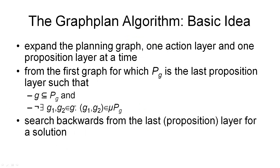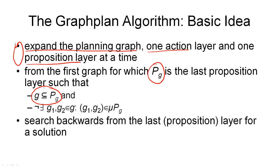Here is the basic idea underlying the GraphPlan algorithm. We start by expanding the planning graph: we begin with the initial proposition layer and expand the graph in each step by one action layer and one proposition layer at a time. This is our first loop. But we don't want to go through this loop forever, so here is the stopping condition: from the first graph which contains a layer PG for which the proposition gives us a criterion that the goal may be satisfied, we check whether all goal propositions are true in the last proposition layer, and whether any pairs of goal conditions are mutex in that layer. When we find such a layer containing all goal conditions with none of them mutex, we can stop — or at least interrupt — our planning graph expansion.